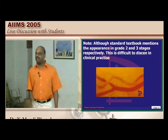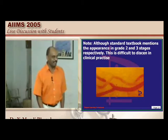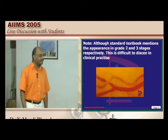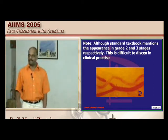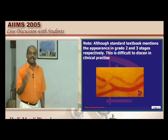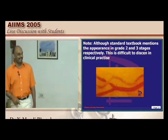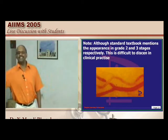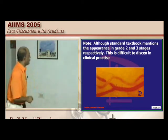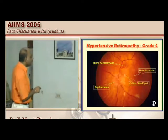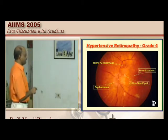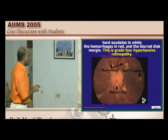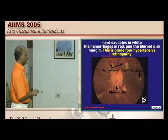When examining the fundus, first check for papilledema — if present, it is Grade 4, necessitating nitroglycerine infusion. Then check for Grade 3 with flame-shaped hemorrhages. AV nipping indicates Grade 2. This is an example of flame-shaped hemorrhage, hard exudate, cotton wool soft exudate, and papilledema — classical hypertensive retinopathy.